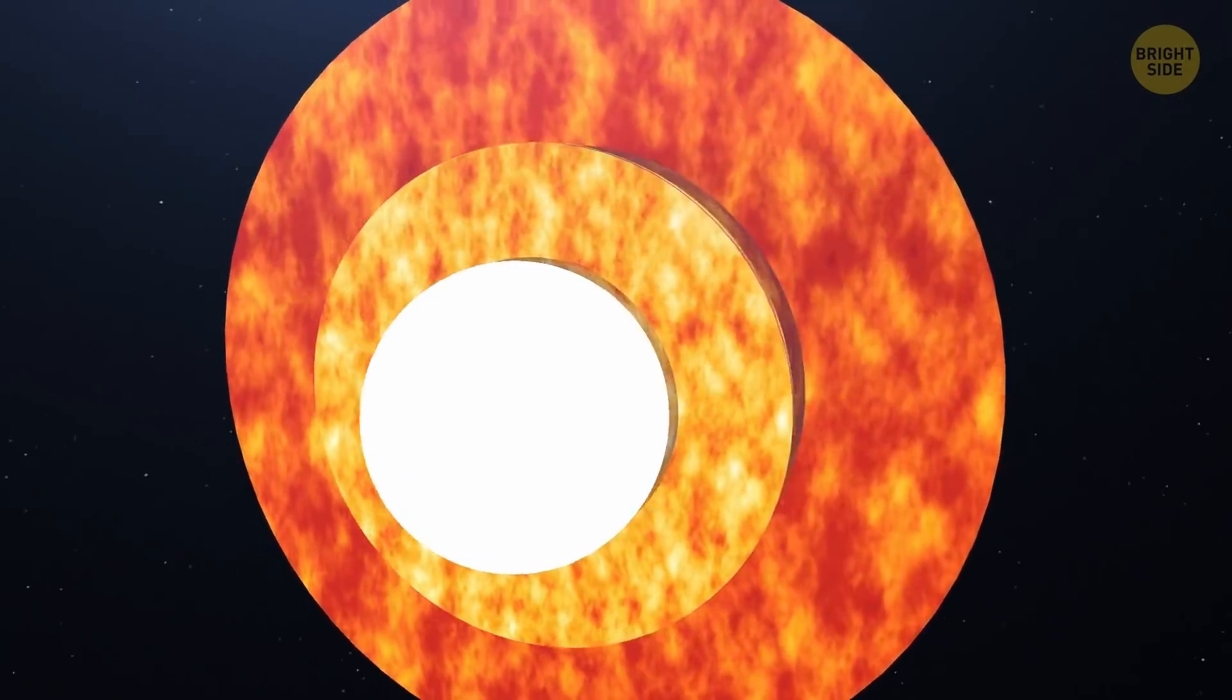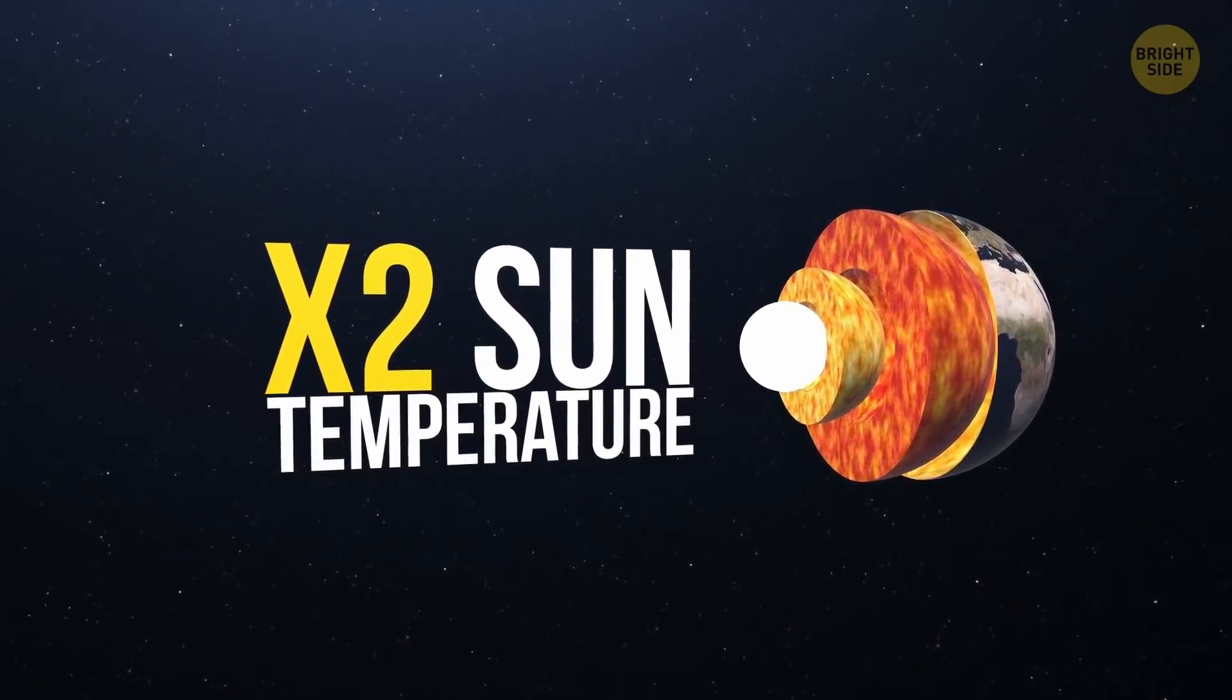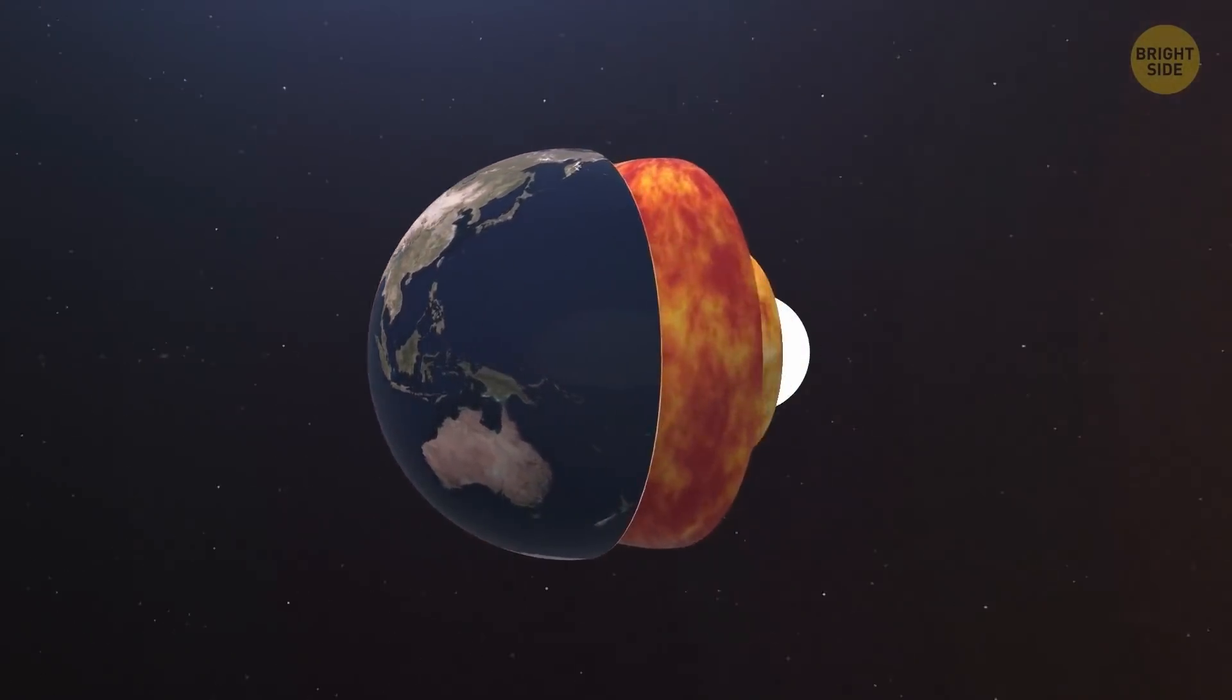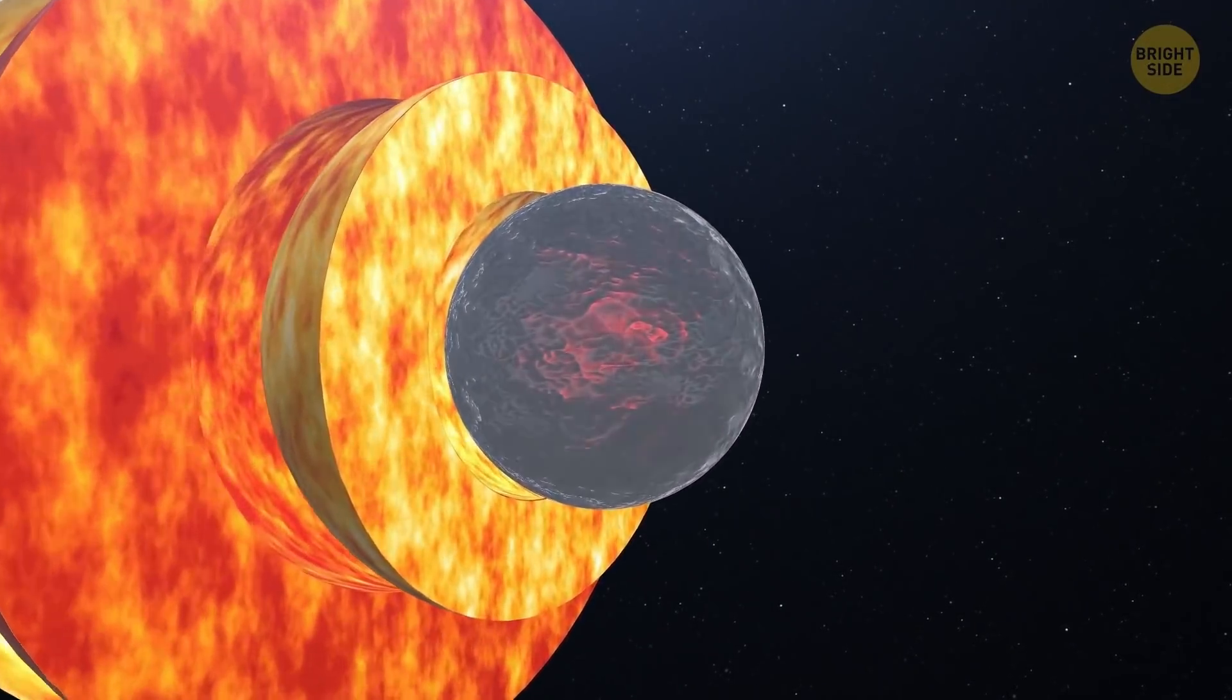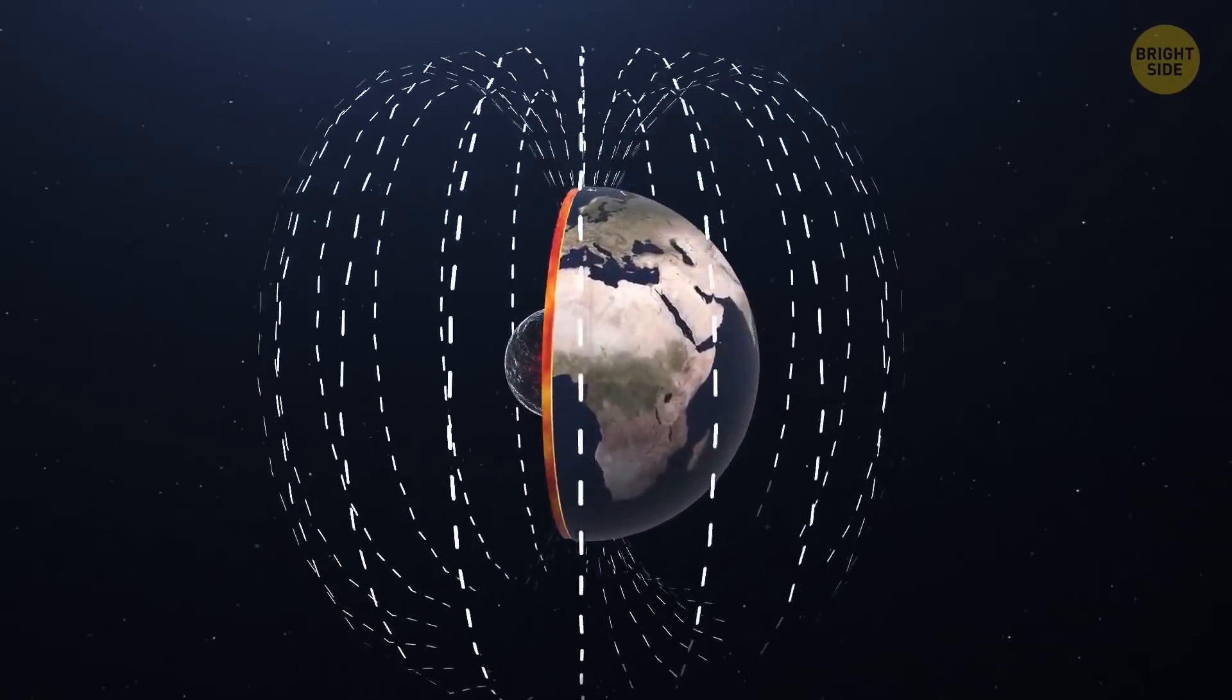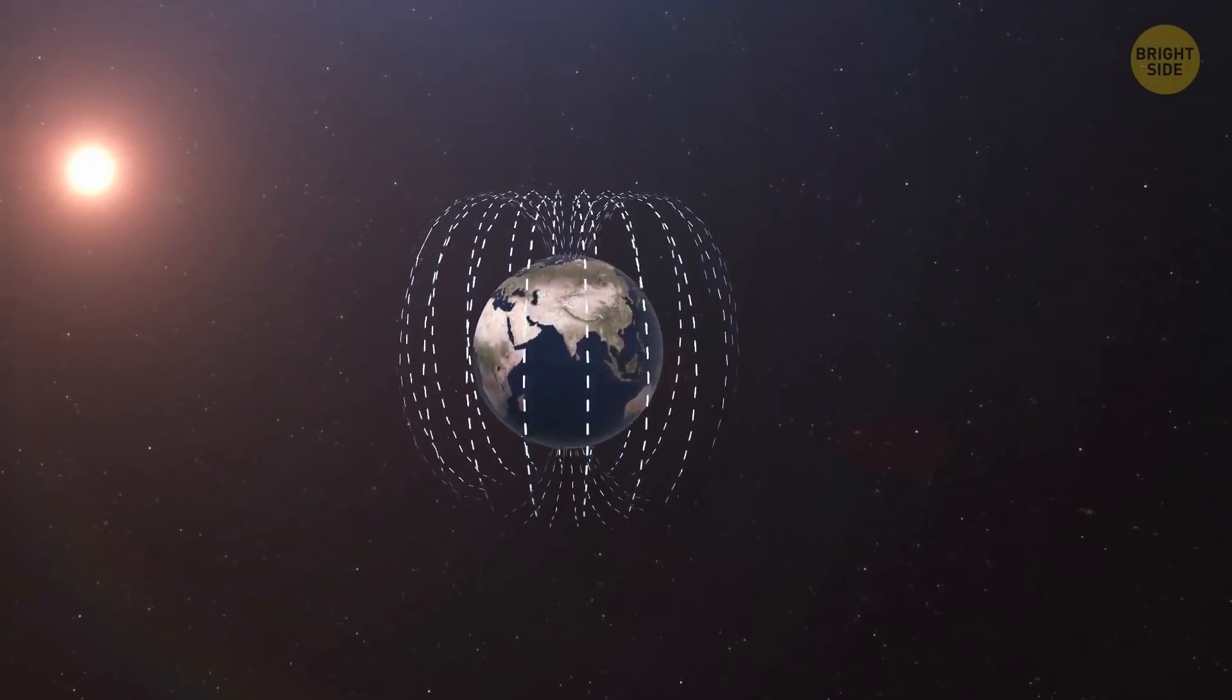The temperature of the Earth's core is more than twice as high as the temperature on the surface of the Sun. And so far, it seems to work well for all of us. But could the planet function if its core turned into a frozen rock? One of the things that makes life on the Earth possible is the geomagnetic field. It's like a powerful superhero that protects us from all the harmful stuff attacking our planet from space,